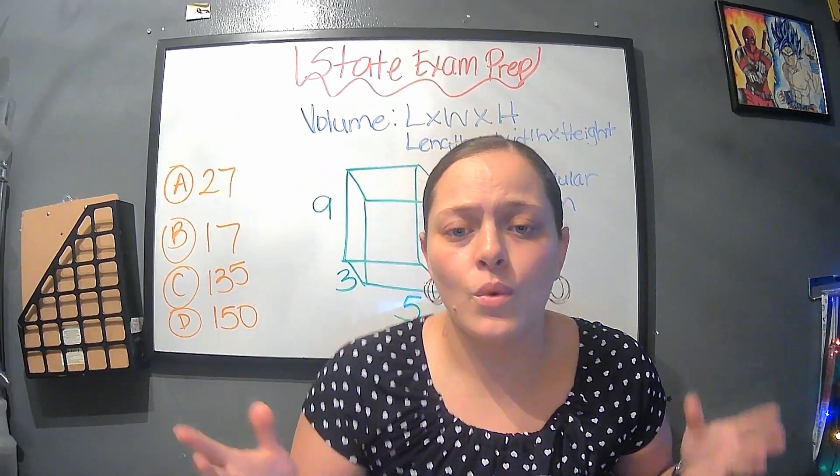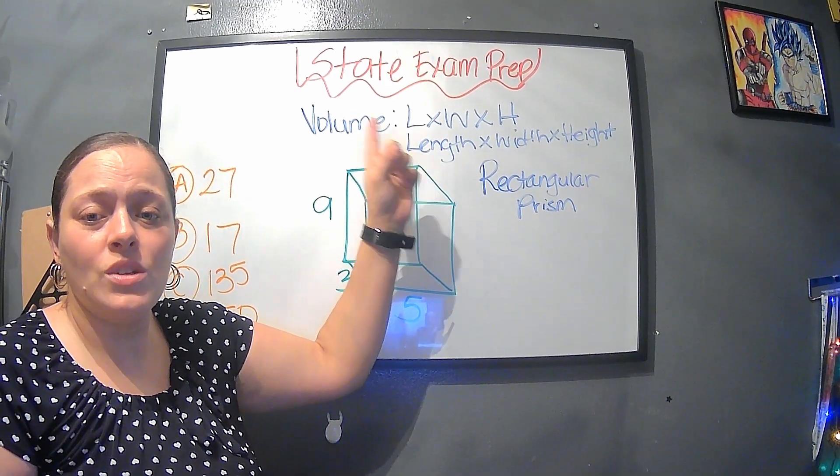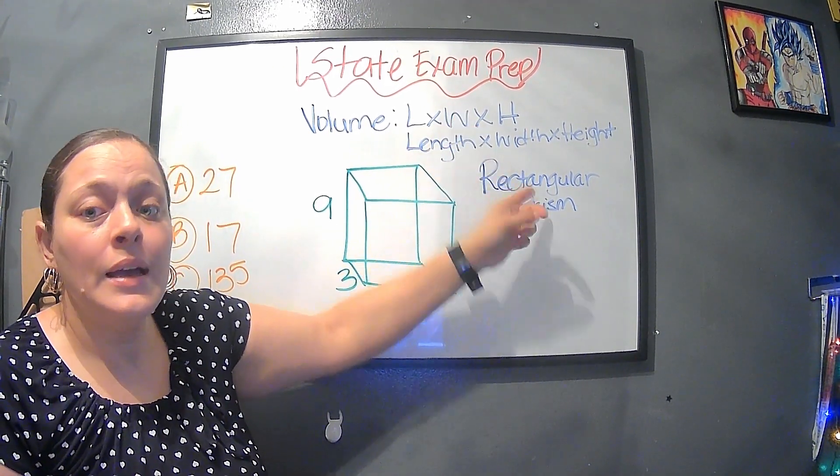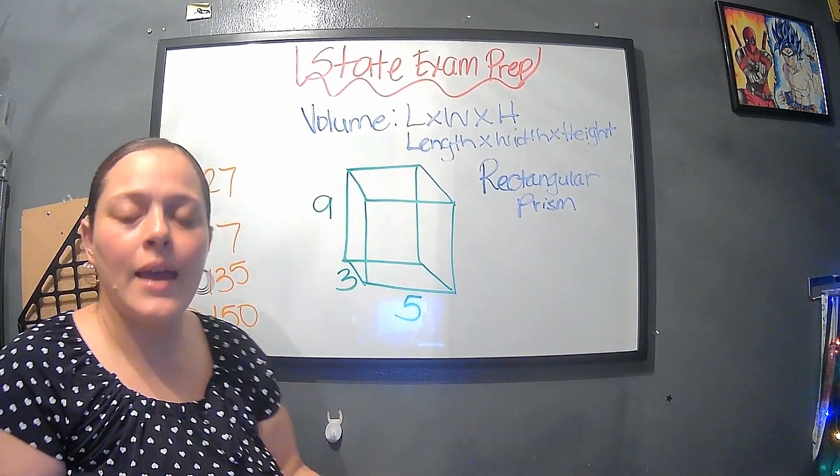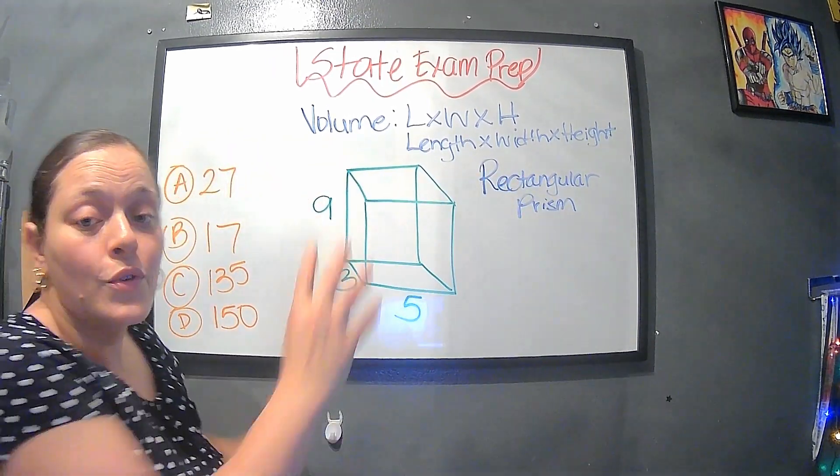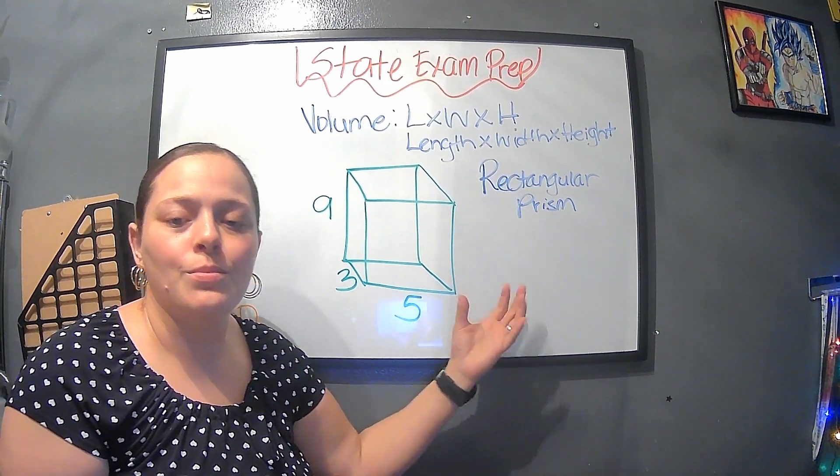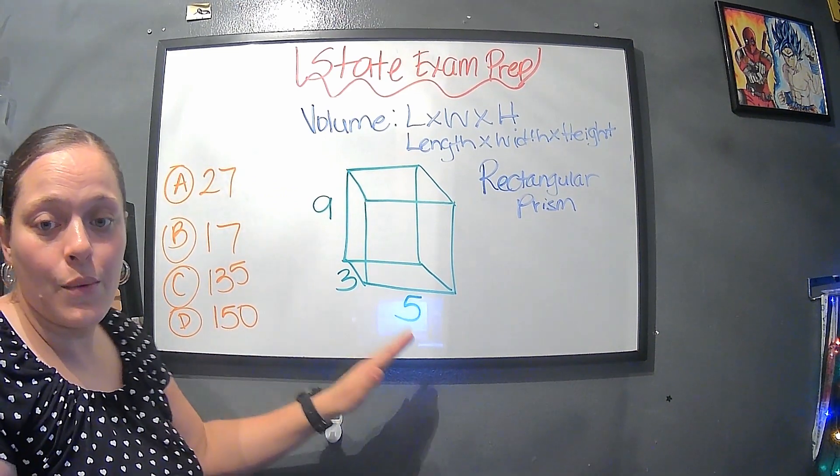In this part, we're talking about volume. Volume is length, which stands for L, width that stands for W, and H which is height. So the way to calculate volume is length times width times height. This is a shape and it is a rectangular prism. These are the sides that we just discussed.